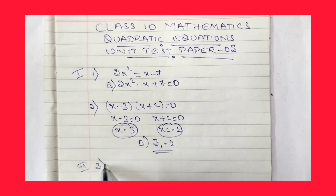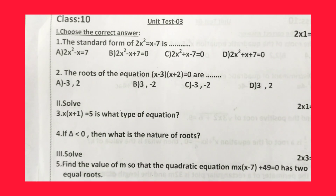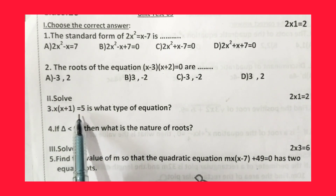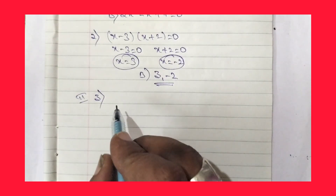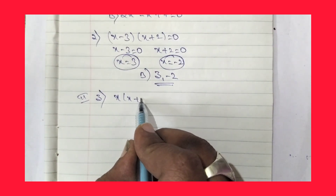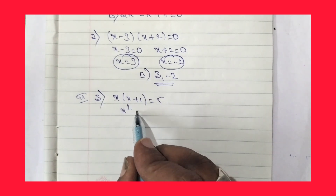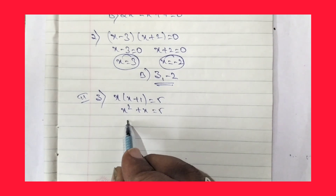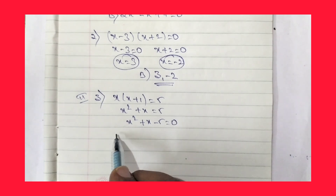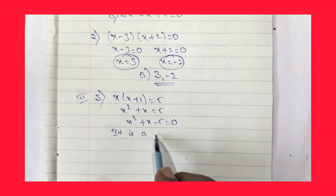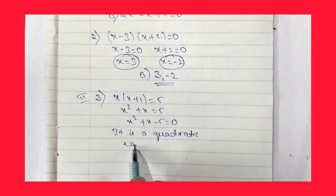Now let us move for question number 3. x(x + 1) = 5 — what type of equation is this? Expanding: x² + x = 5, so x² + x - 5 = 0. Our answer is: it is a quadratic equation because it has degree 2.